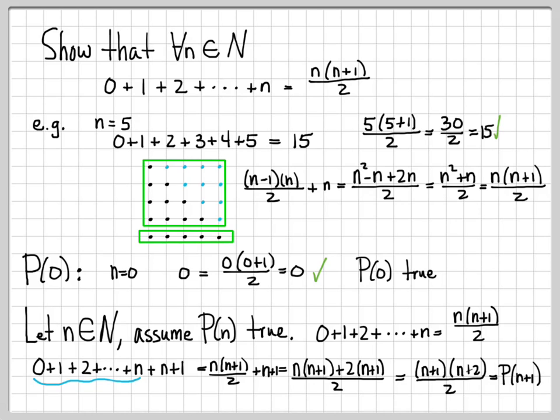So what we've done here is we've assumed that P of n is true. We assumed this. And then we showed that this is equal to this. So we've shown that P of n plus 1 is true also. So that finishes the induction. And now we know that this is a true statement for all n in N, for all integers.